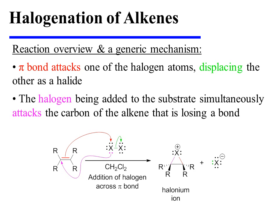Three mechanistic arrows describe this addition. In the first arrow, the pi bond attacks one of the two halogen atoms. This results in the displacement of the other halogen as a halide.